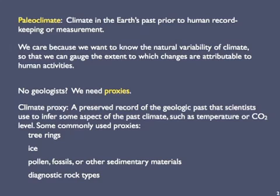For most of Earth's history, no geologists were around to observe or measure climate. To deal with this dearth of information, geologists use proxies. The term proxy has a lot of different meanings. Ones that are relevant to our needs are representative, substitute, or surrogate. A climate proxy is a preserved record of the geologic past that scientists use to infer some aspect of the ancient climate, such as temperature.